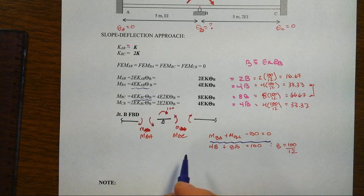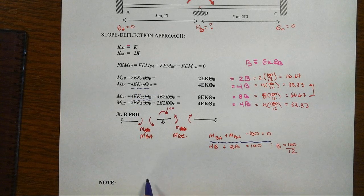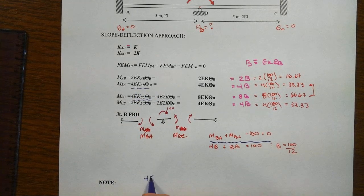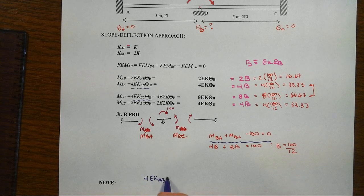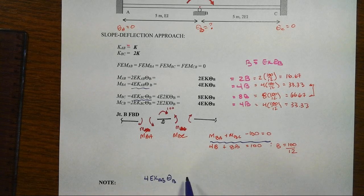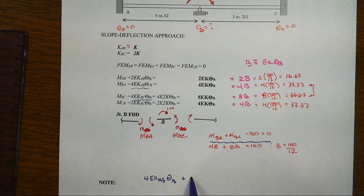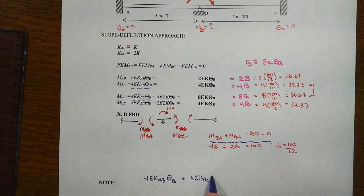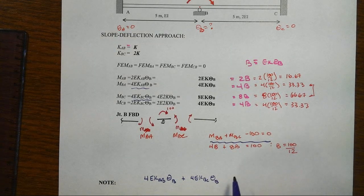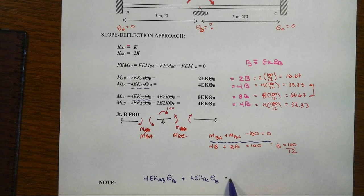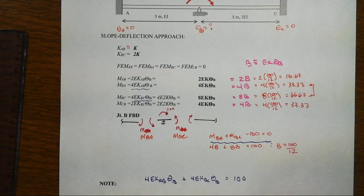So that's MBA is equal to then 4EKAB times thetaB plus then 4EKBC times thetaB, and that's going to then be equal to this unbalanced moment of 100.